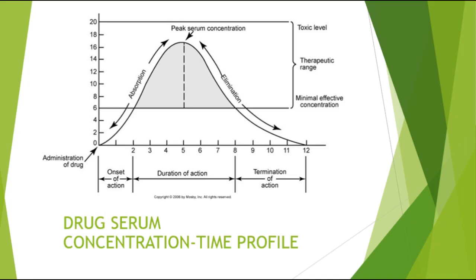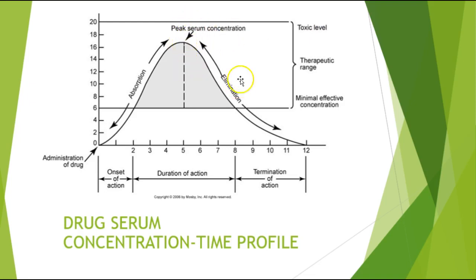Looking at the drug serum concentration-time profile: we have the onset of the drug, then absorption occurring, followed by peak serum concentration and elimination. There's the onset, the duration of action where it's working, then the peak, and it starts to decline as it's being metabolized, until termination of action when it's eliminated. If you go too high you reach the toxic level; within the therapeutic range is where you want to stay, with the threshold dose being the minimum amount needed for it to work.